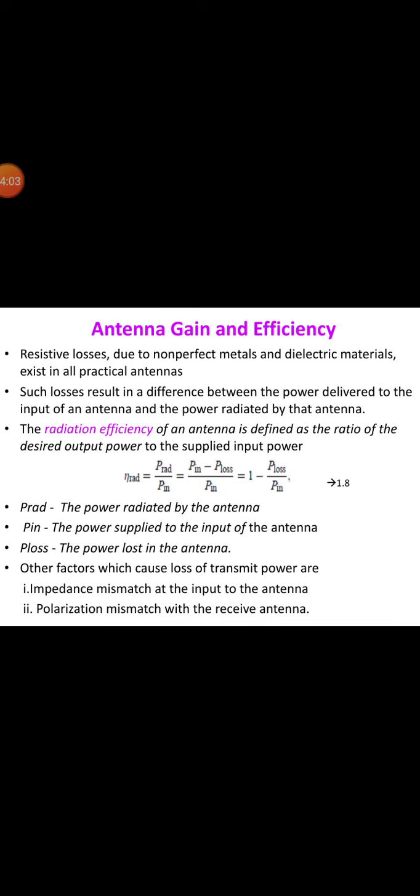And dBd is decibels relative to a dipole antenna. Note that a half wavelength dipole antenna has a gain of 2.15 dBi. And hence, 7.85 dBd means the peak gain is 7.85 dB higher than the dipole antenna, and this is 10 dB higher than the isotropic antenna.